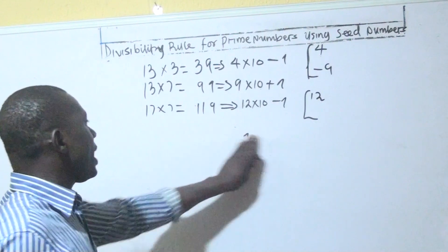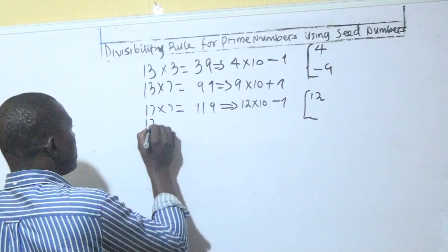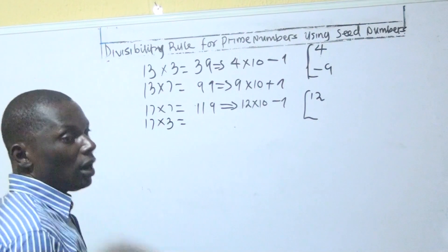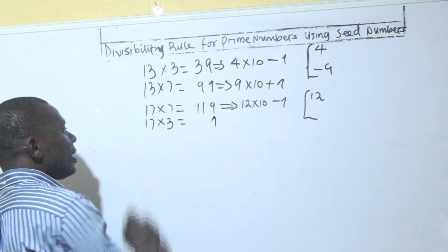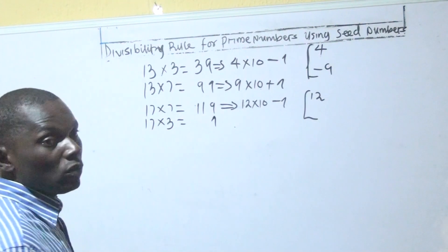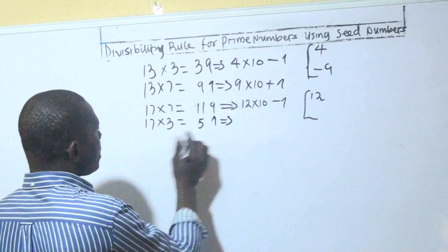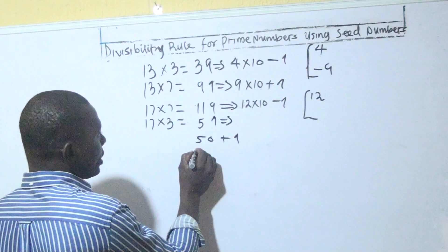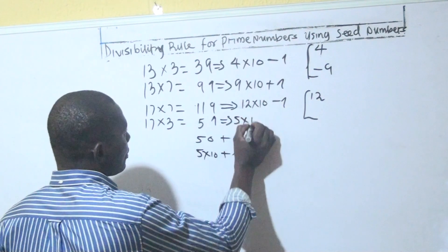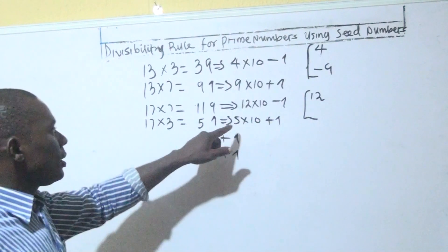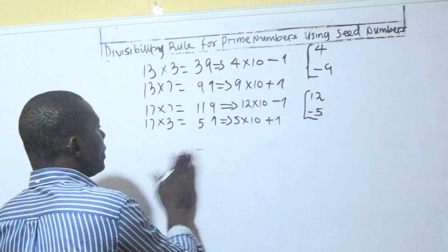Now let's look at another prime number that can multiply 17 so that the unit digit ends in 1. That is 17 times 3: 3 times 7 is 21, write 1 carry 2; 3 times 1 is 3 plus 2 gives 5. So 17 times 3 is 51. We express 51 as 50 plus 1, which is 5 times 10 plus 1. Because this ends with plus 1, the seed number becomes minus 5.